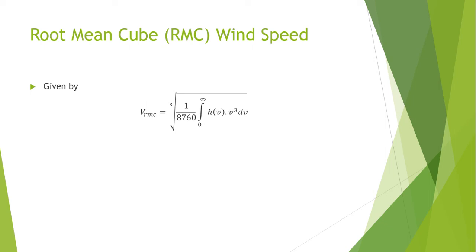Since wind power has a cubic relation with speed, the concept of RMC or root mean cube has been developed and defined by this equation, developed in 1999. All sites with the same RMC speed would have the same annual energy potential.